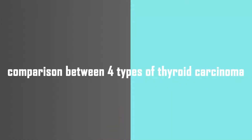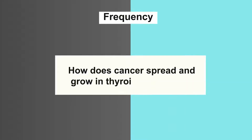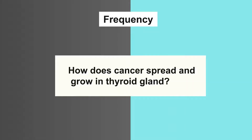Today I will make a comparison between four types of thyroid carcinoma. Feature number one is frequency, which means how does cancer spread and grow in the thyroid gland?